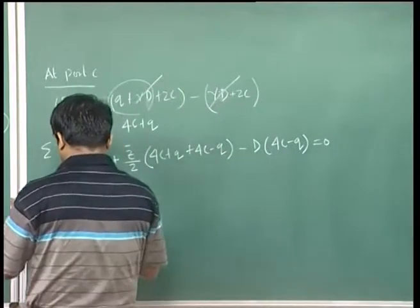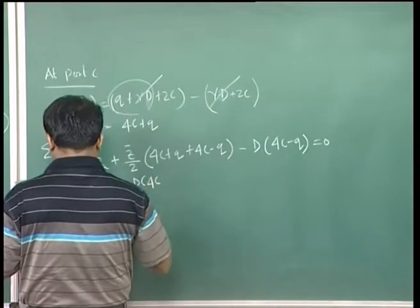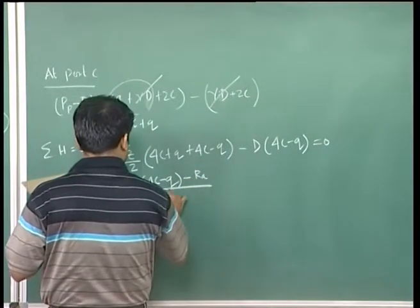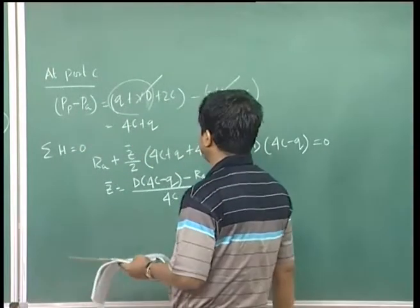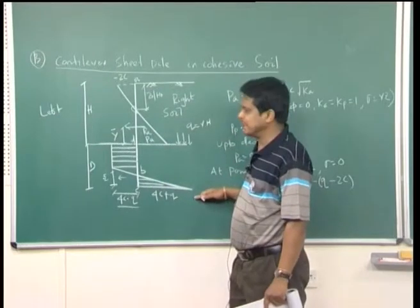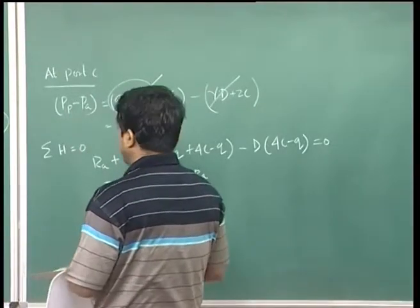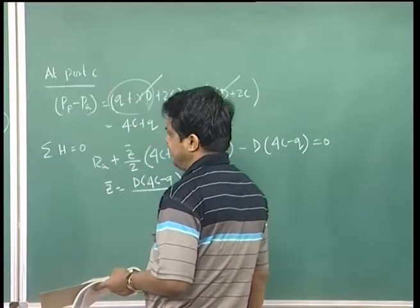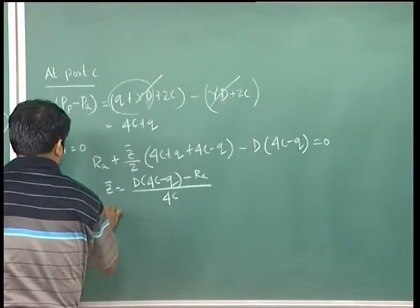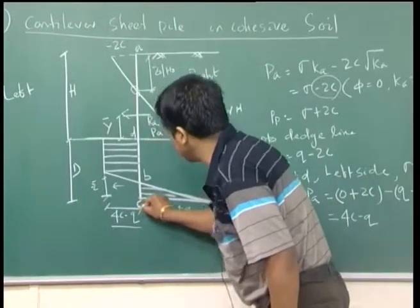Z̄ is the distance below point D where the pressure intensity changes — point B must be identified first. Once Z̄ is known, take moment at point C equal to zero to find the two unknowns. Moment at C = 0 gives: RA·ȳ + D − D²/2 · (4C − Q) + Z̄/3 · Z̄/2 · (4C − Q + 4C + Q) = 0.